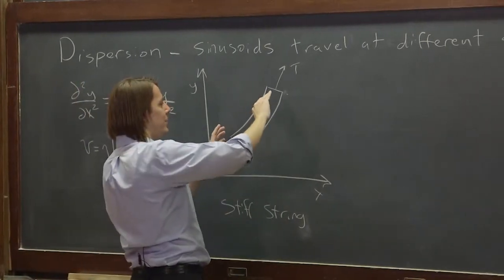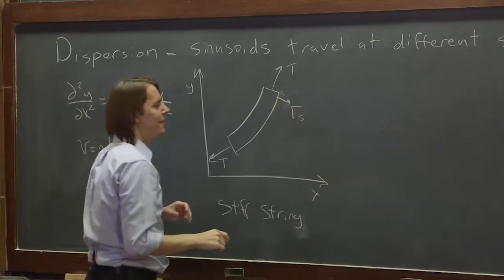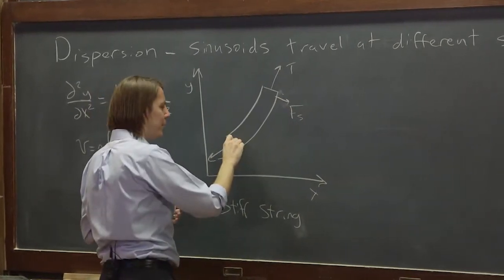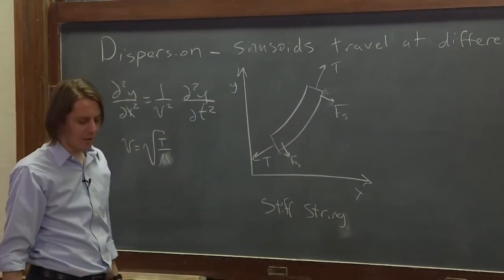So if this little piece is bent then there's a little force you can think of as being here. I'll put F for stiffness and there's a little force pulling it back here, F for stiffness. It wants to come back and be straight.